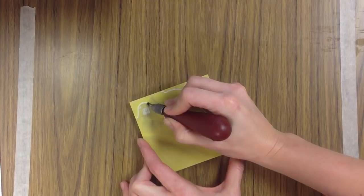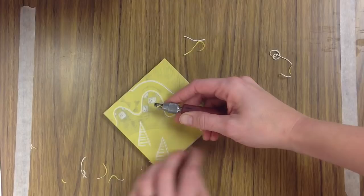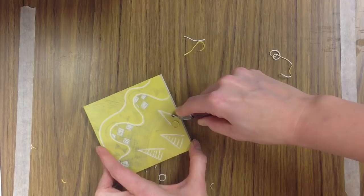So just very carefully taking your time, thinking about your design, go in there and carve away all of the parts that are going to be yellow.